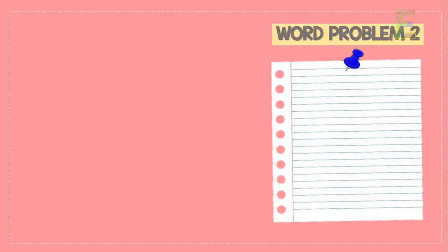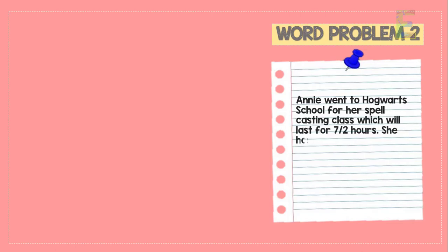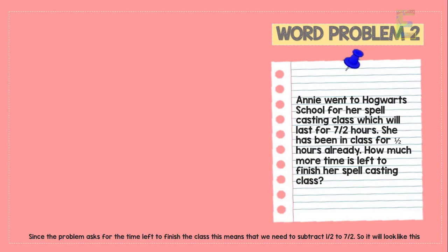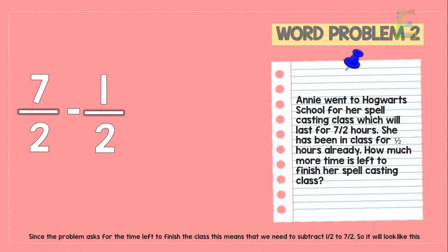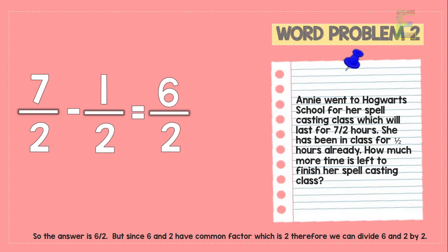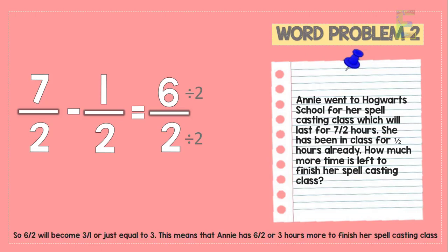For the next problem: Annie went to Hogwarts school for her spell casting class, which will last for 7 over 2 hours. She has been in class for 1 half hours already, so how much more time is left? Since 7 over 2 and 1 half are similar fractions, we copy the denominator and subtract the numerators. The answer is 6 over 2. Since 6 and 2 have a common factor of 2, we divide to get 3 over 1, which equals 3. Annie has 3 more hours to finish her spell casting class.